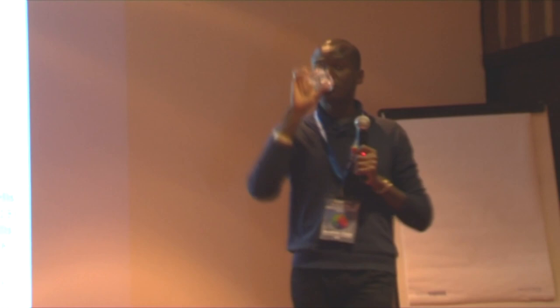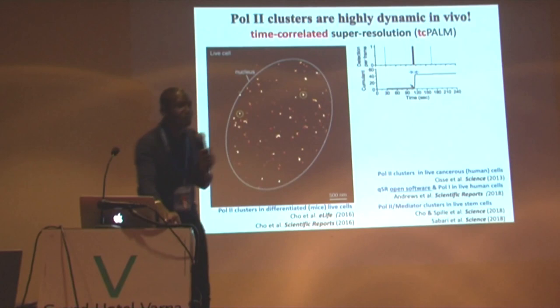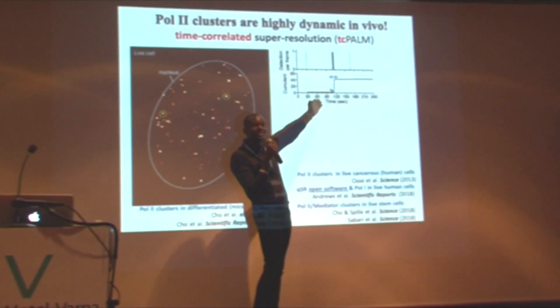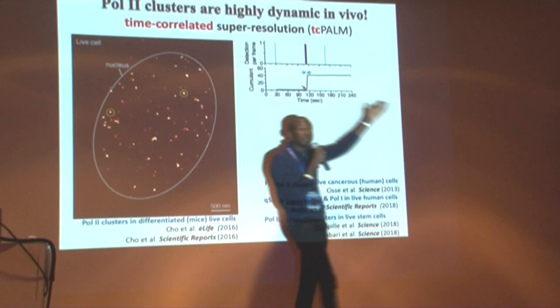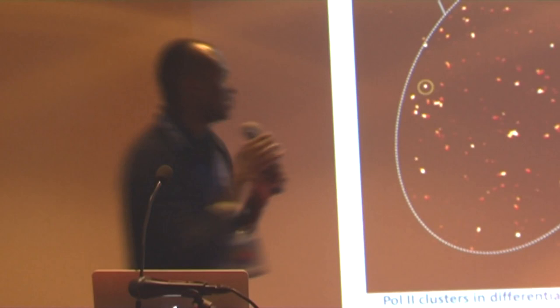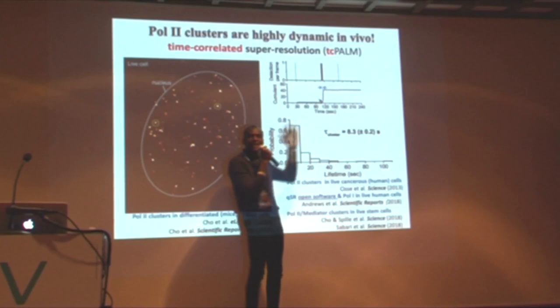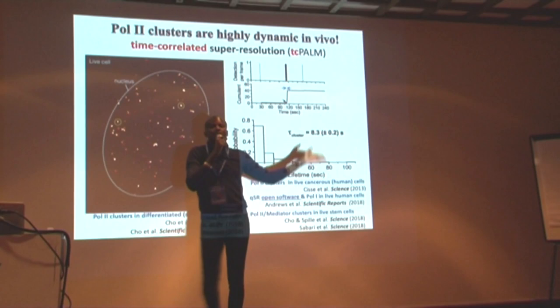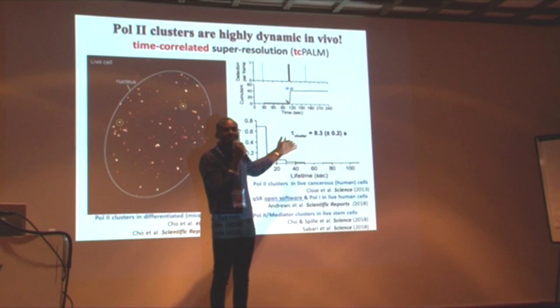From TC-PALM traces you can estimate when a cluster assembled and when it disassembled, giving you the cluster lifetime. Doing that for many clusters from many imaged cells, you can plot a histogram of cluster lifetimes and calculate various parameters. The simplest is the average cluster lifetime, which seems to be about eight seconds.